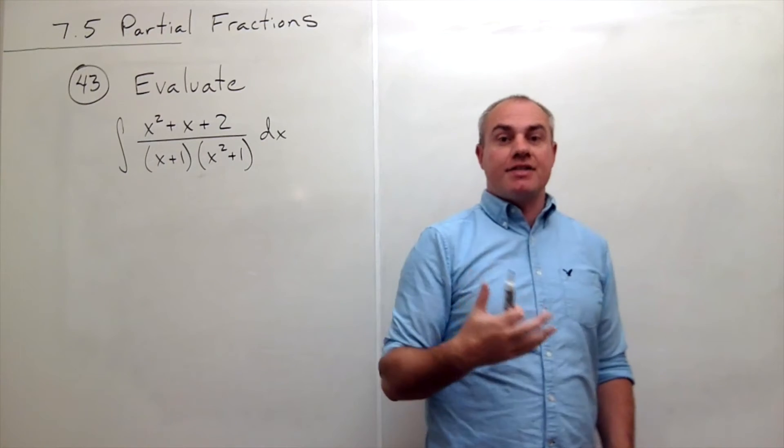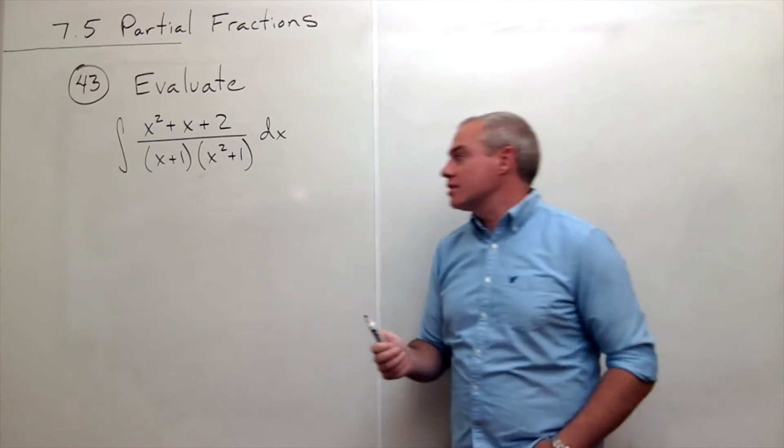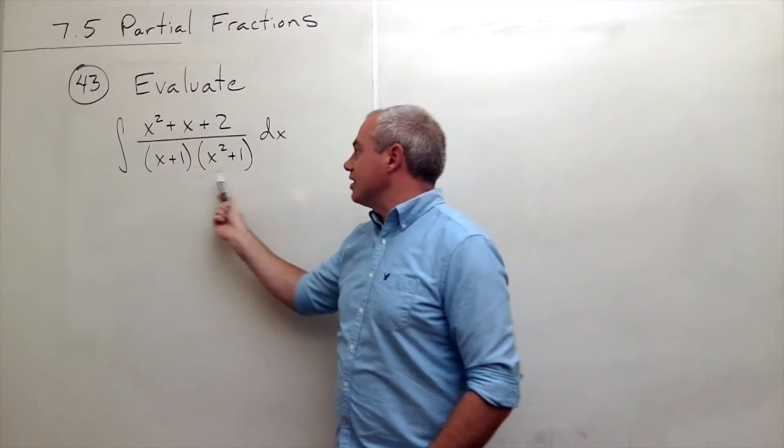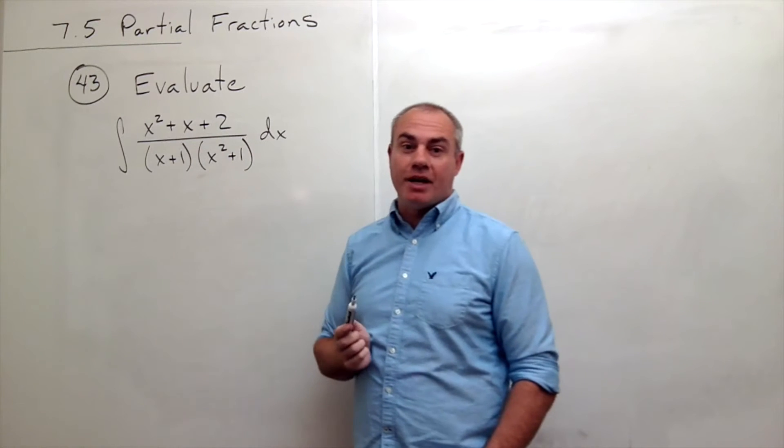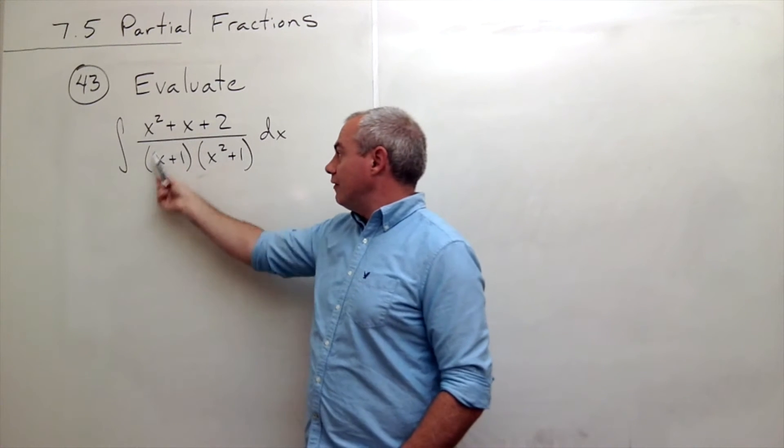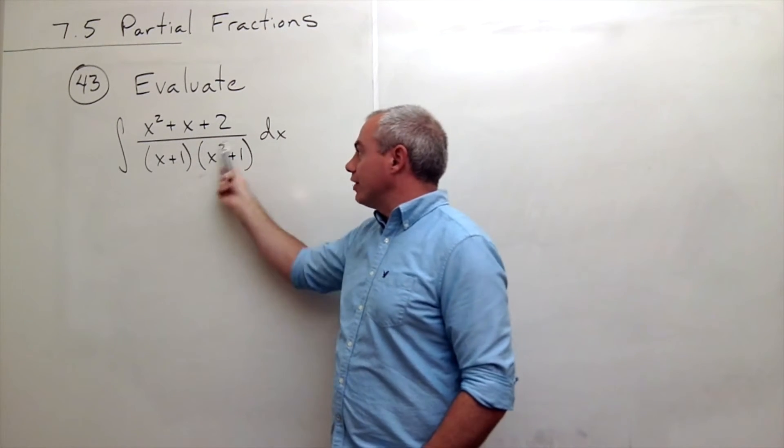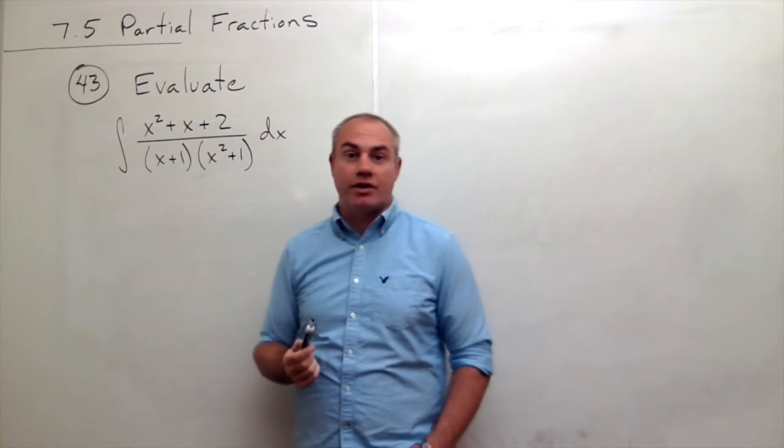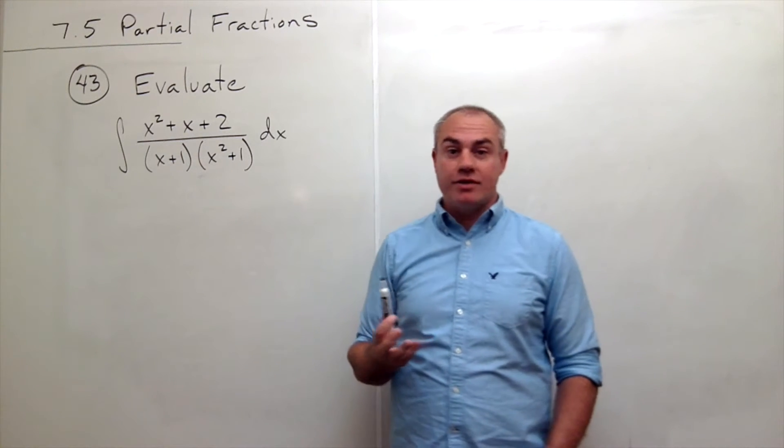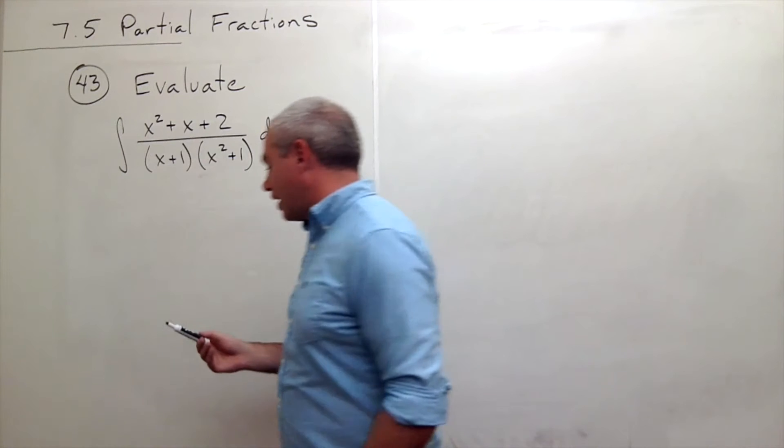I'm going to break this thing up using partial fractions, and right off the bat I see on the bottom in the denominator I have a linear factor and I have an irreducible quadratic factor. So I'm going to have two fractions, and so let's write this down.